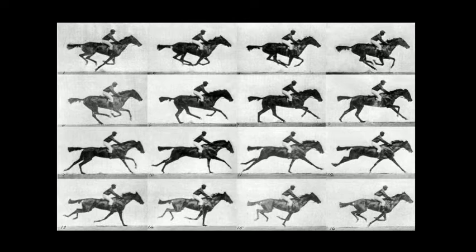Now this sequence of photos is important for another reason — not just the series that settled the question about the horse's legs. Muybridge would string these photos together in a device that would display them one after another rapidly, so that you would get a sequence of images going by that was basically a motion picture.